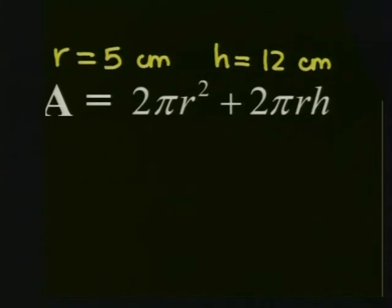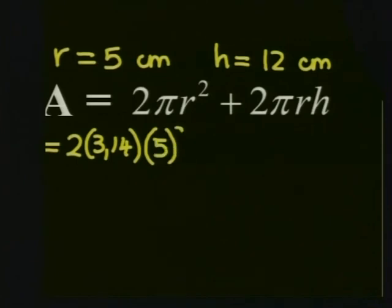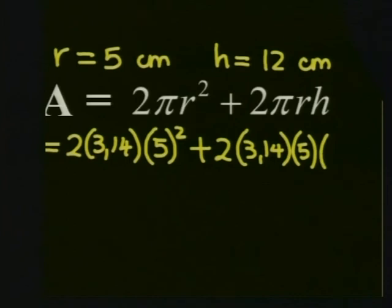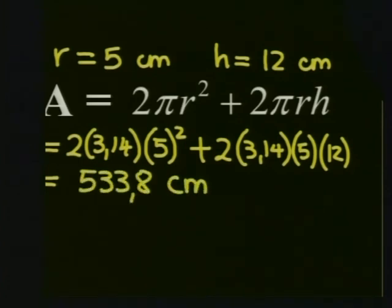Substituting these points in we get area is equal to 2 times the value of pi which is 3.14 multiplied by radius which is 5 squared, plus 2 times pi which is 3.14 multiplied by the radius which is 5 multiplied by the height which is 12. So our total surface area is 533.8 centimeters squared.